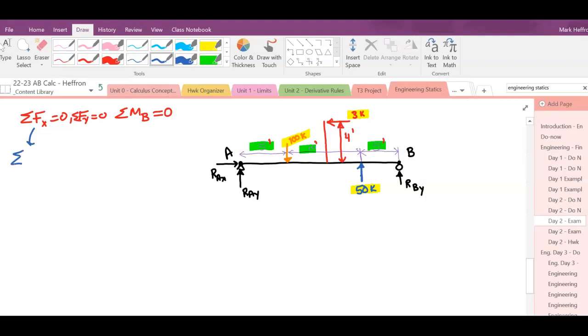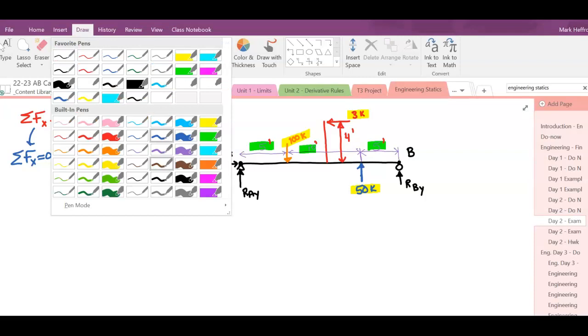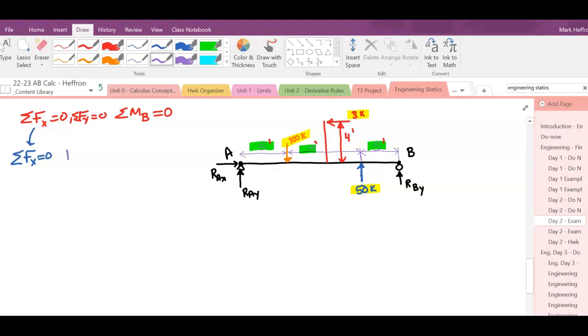So my sum of forces in the x is super easy. We've got RAx to the right, minus 3 kips equals 0. Or, RAx equals 3 kips because we had to add 3 to both sides. Because it's positive, that means our assumed direction to the right is correct.